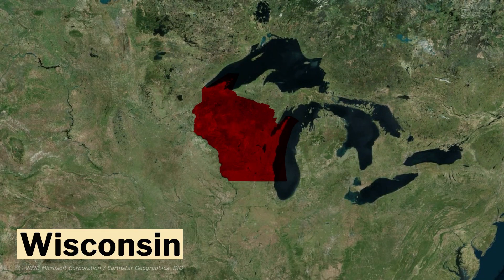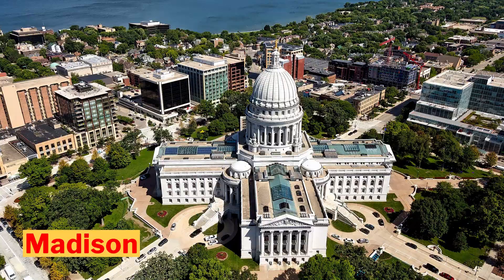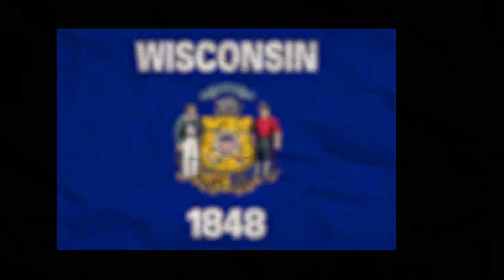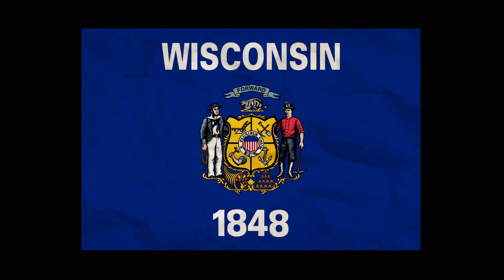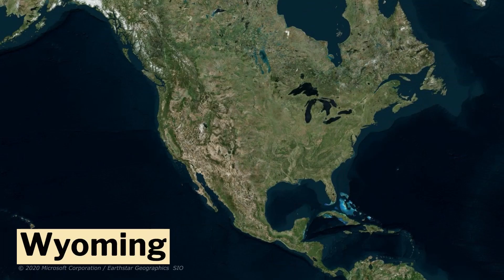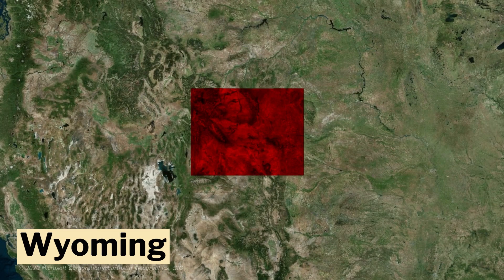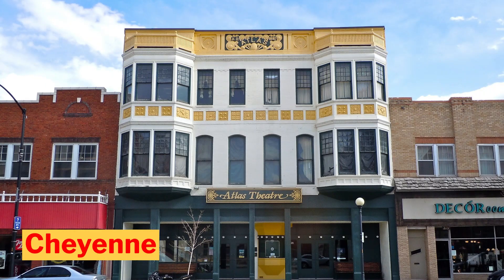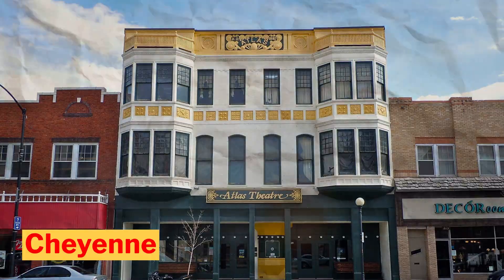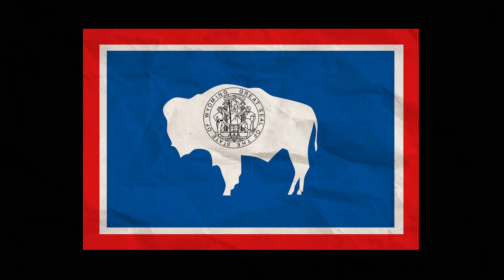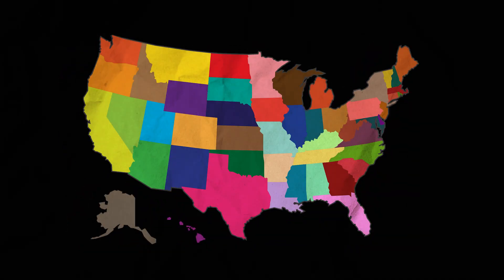Number 49, Wisconsin. Its capital is Madison. This is the flag of Wisconsin. Number 50, Wyoming. Its capital is Cheyenne. This is the flag of Wyoming. So that was the USA State Wise Division for you.